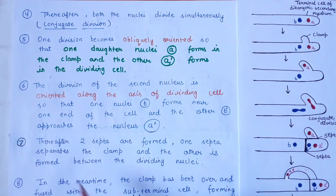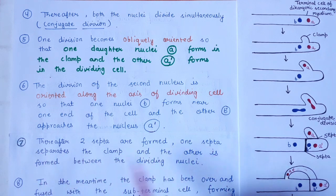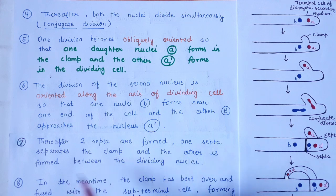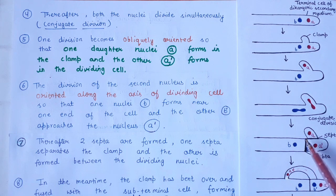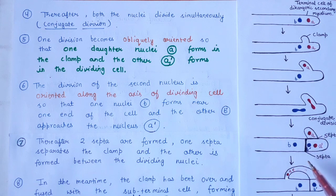After this, two septa are formed. One septum separates the clamp, and the other is formed between the dividing nuclei. One septum seals the clamp cell and the other septum forms close to the clamp cell.